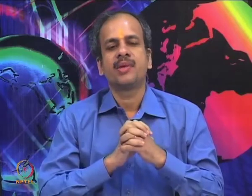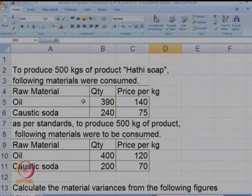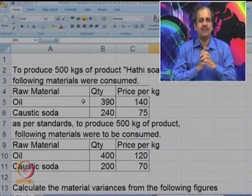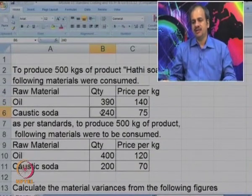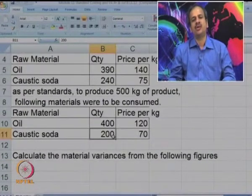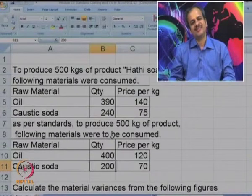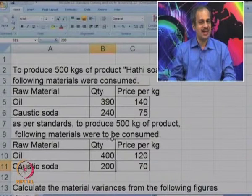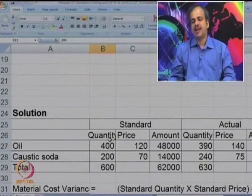Have a look at the next case. For production of 500 units of product Hathi soap, we require two raw materials: oil and caustic soda. The actual consumption is 390 and 240. As per the standard, the consumption should be 400 and 200. Prices are also given. We have to calculate material variances from these figures. In this case, we do not have to recalculate the standard because the table is already for the same output.